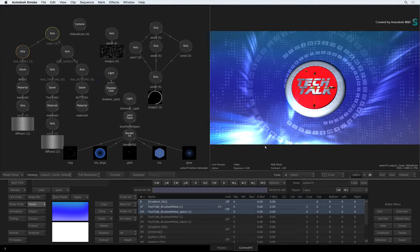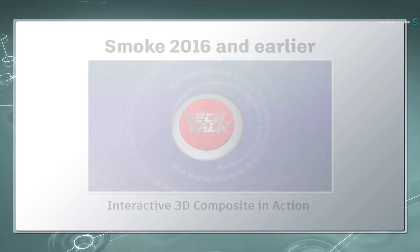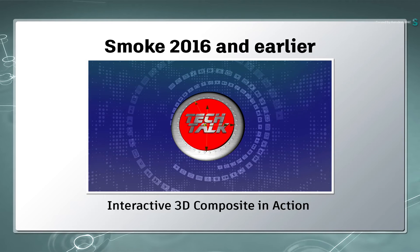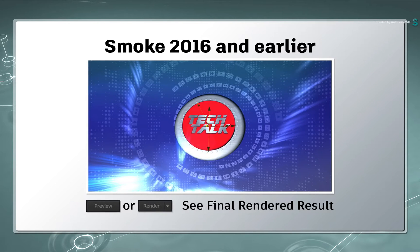In order to understand what you're about to see, I just want to touch on how the previous version's Result Viewer used to function. In the previous version of Smoke, you could visualize your 3D composites as you interacted with Action. However, to get a proper idea of the final render, you needed to press the Preview button to see the final result. This would add anti-aliasing, motion blur and other processing effects.